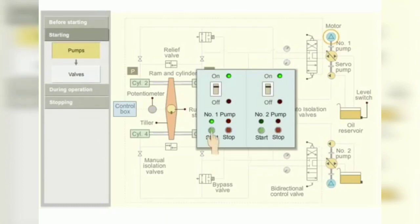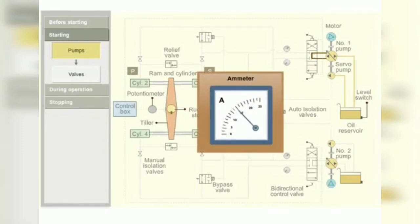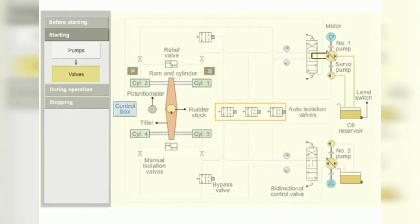The number one steering pump motor is started. The main pump and the servo pump start running. Check the amperage of the motor. Electrically operated isolating valves are kept in open position.